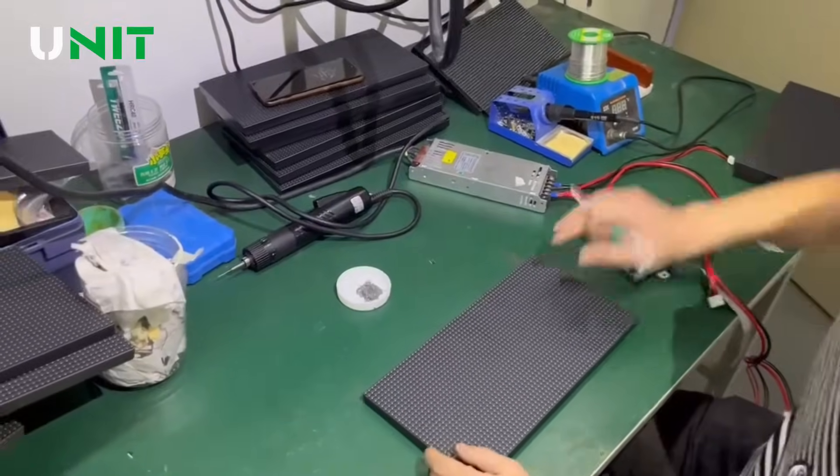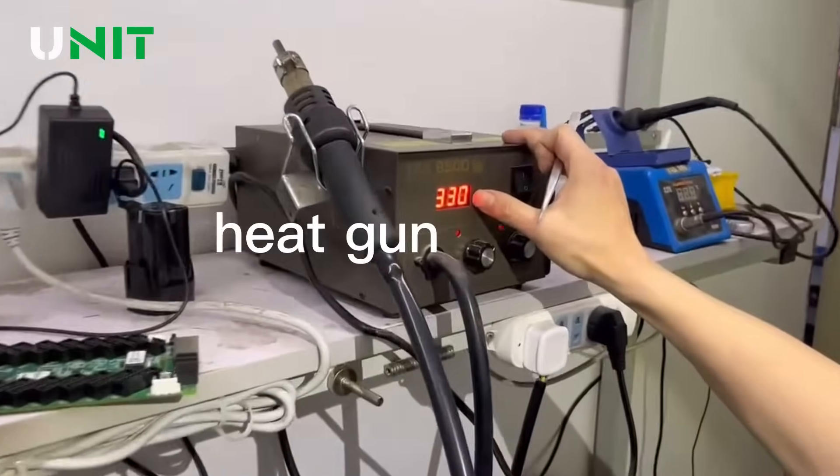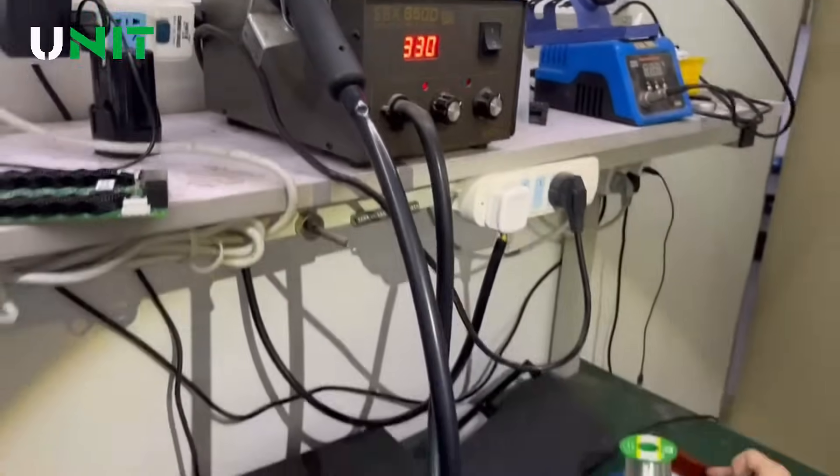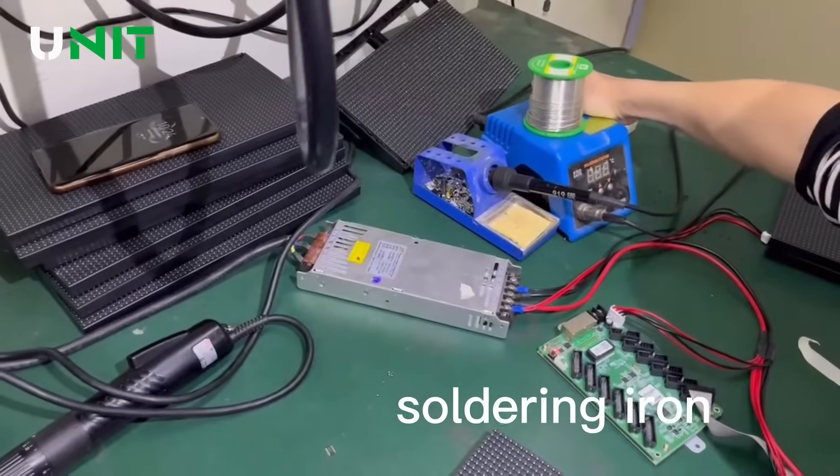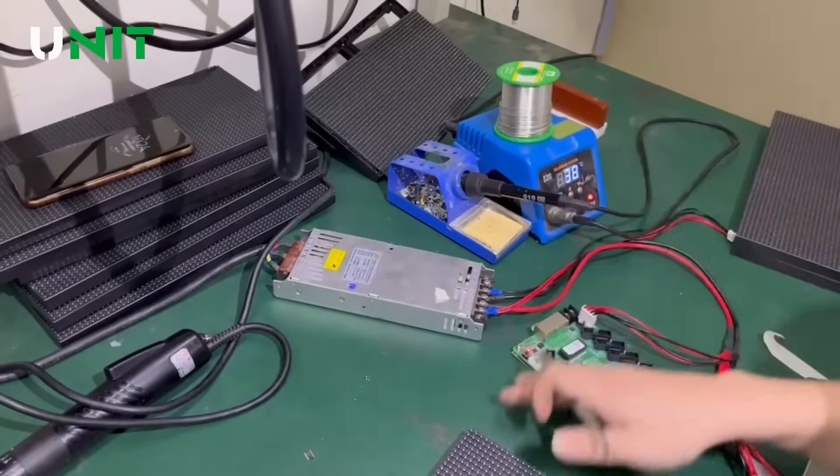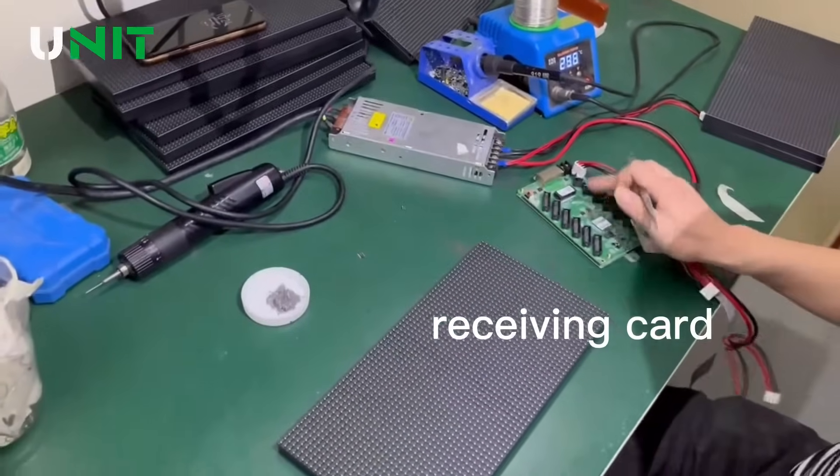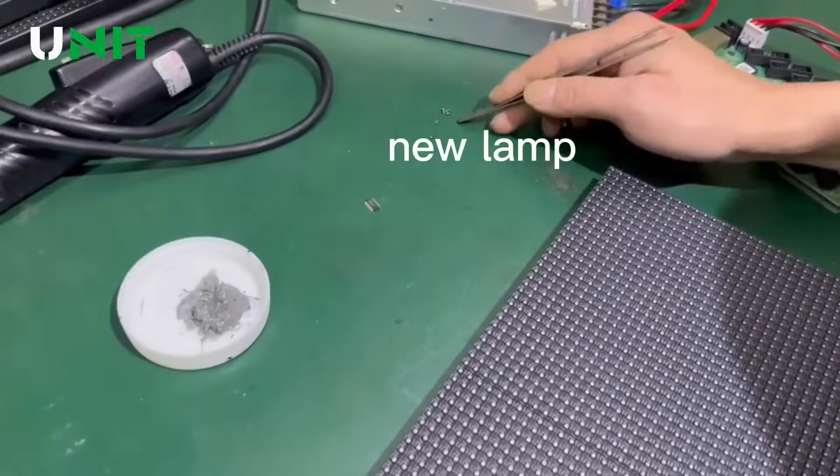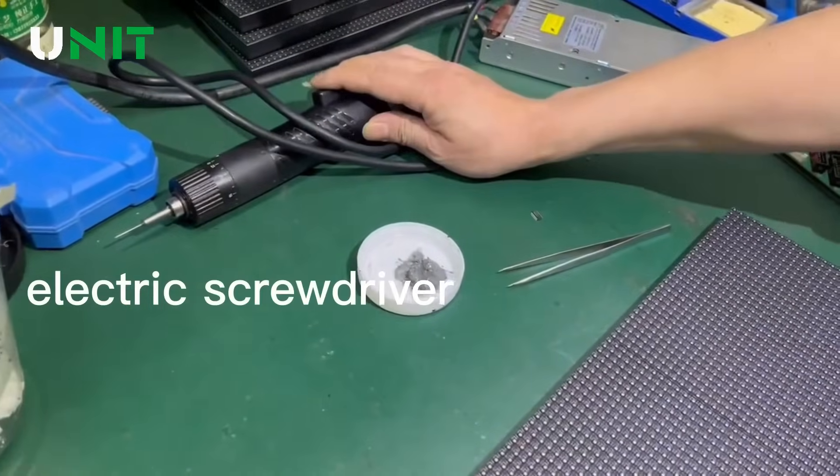To repair indoor modules, the tools we need are: heat gun adjusted to about 300 to 330 degrees, soldering iron, power supply, receiving card, solder paste, IC, new lamp, tweezers, and electric screwdriver.